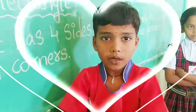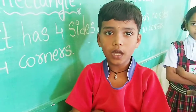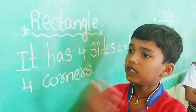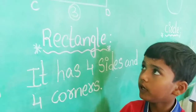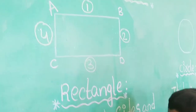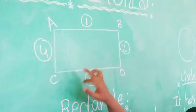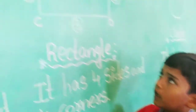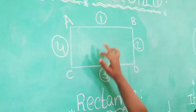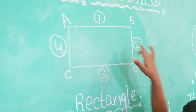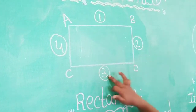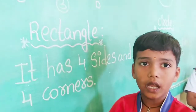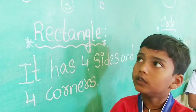Hi, my name is Lakshmi Trasanna. Today I am going to tell you about geometrical figures. My figure name is rectangle. Rectangle has opposite sides. Rectangle has 4 sides: Side 1, Side 2, Side 3, Side 4. And rectangle has 4 corners.